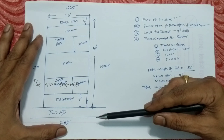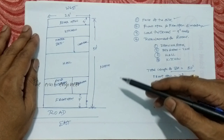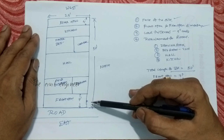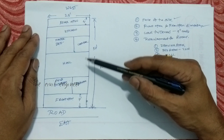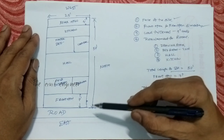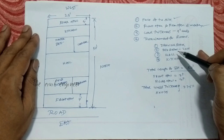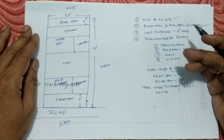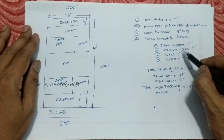Because it is facing east, the next consideration is front open and rear open dimensions. For any building we have to keep some front and rear openings. In this case the front opening is 7 feet and rear opening is 4 feet. These dimensions depend upon the total length of the site — here 50 feet — so 7 feet and 4 feet are kept for front and rear openings respectively. The third consideration is wall thickness. Generally the walls are constructed with columns, typically 9-inch walls, so the wall thickness is 9 inches. Next are the room requirements, which depend upon the requirements of the owner. Here: one drawing room, two bedrooms, one hall, and one kitchen.